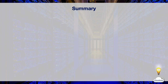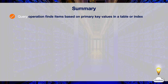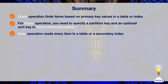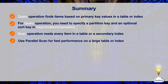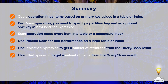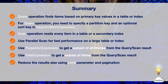In this episode we've learned query and scan operations in DynamoDB. Query finds items based on primary key values in a table or secondary index. For a query operation, you need to specify a partition key and an optional sort key in the key condition expression parameter. Scan operation reads every item in the entire table or secondary index. You can use parallel scan for fast performance on a large table or index. You can use projection expression with both operations to get a subset of attributes, and filter expression to return a subset of items. You can also reduce result size by setting the limit parameter and implementing pagination.